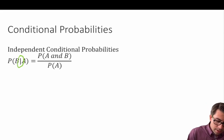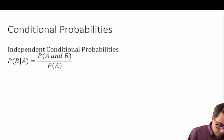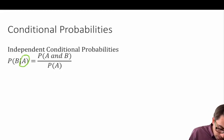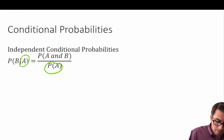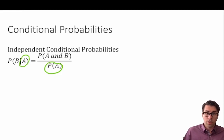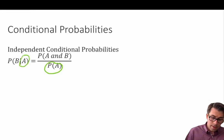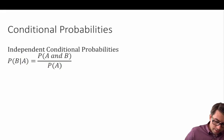When we see this vertical line, we read it in statistics as 'given' — it's just a shorthand way of saying given. Whatever is to the right of this vertical line, in this case event A, will appear in our denominator of our conditional probability equation. So the probability of B given event A equals the joint probability of A and B occurring together divided by the marginal probability of event A.